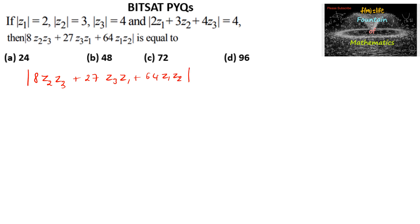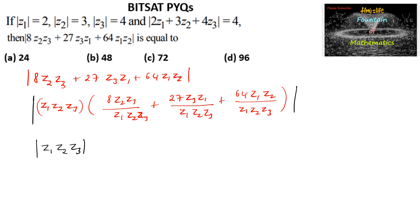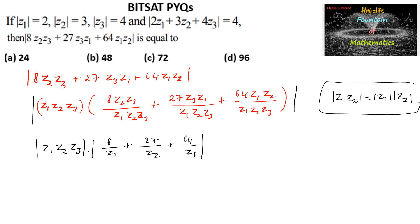Let us multiply and divide by z1z2z3, giving us 27z3z1 divided by |z1z2z3|, and 64z1z2 divided by |z1z2z3|. So we can factor out |z1z2z3| multiplied by the mod of (8/z1 + 27/z2 + 64/z3). Since we know that |z1z2| = |z1|·|z2|, we use this property to separate the moduli.